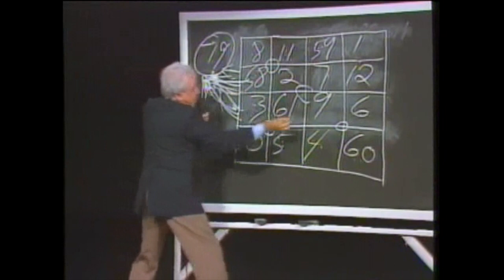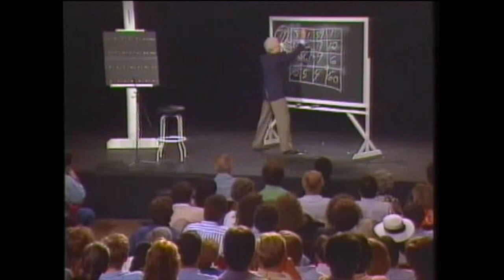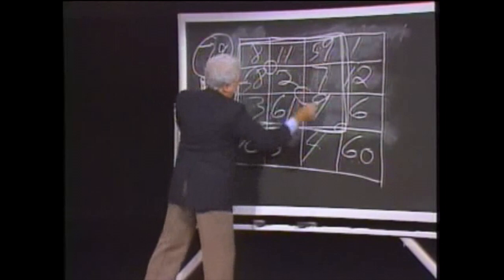Look, in every square of 16, there are four squares of nine. Let me make it heavier so you'll see what I'm talking about. You see the square of nine here, three by three? Well, if you add the four corner digits of that, 8, 59, 9, and 3, that'll give you 79.